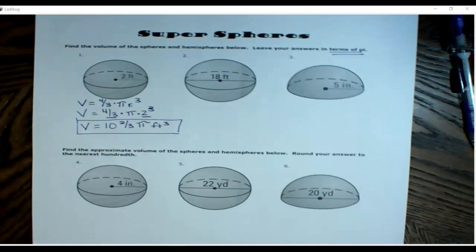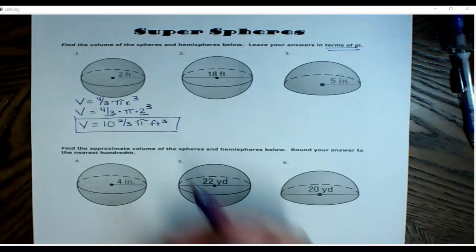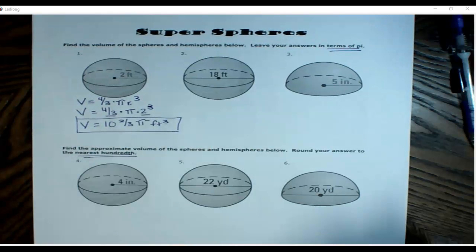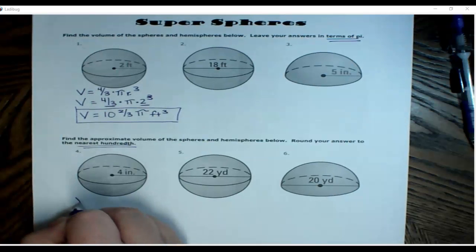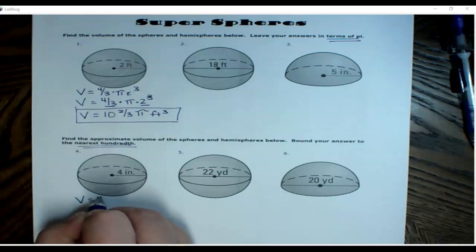All right, let's look down at number four. Number four, they want us to round to the nearest hundredth, so we have to include pi in our calculations. So we need to start out the same way, write the formula. Volume equals four-third times pi r cubed.